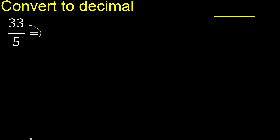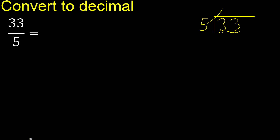33 divided by 5. 3 is less, therefore next. 33 — 5 multiplied by which number is nearest to 33 but not greater? 5 multiplied by 7 is 35, which is greater. 5 multiplied by 6 is 30, which is not greater. 33 minus 30 is 3, next.